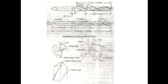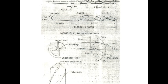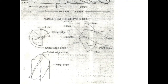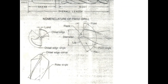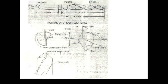Parts shown in the diagrams include: tang, shank, body of the drill, and a flute cut in the twist drill. Some of the other parts shown are land, chisel edge, chisel edge angle, flank, lip, face, point angle, point, chisel edge corner, and rake angle.